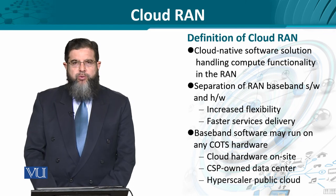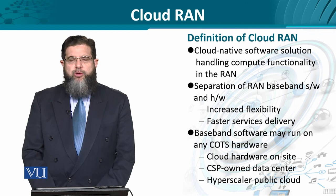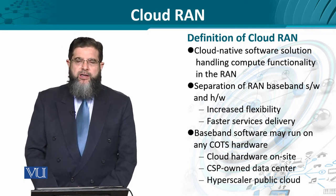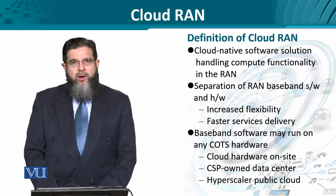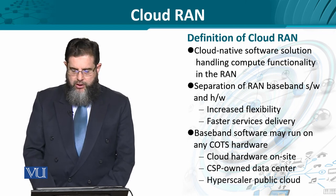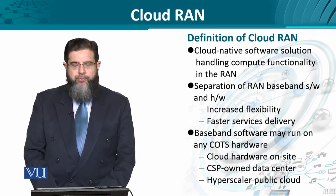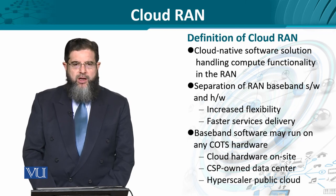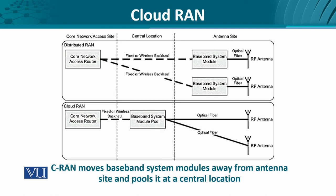The cloud-based software will be controlling or accessing the hardware which was earlier deployed on-site. We have options: an on-site cloud known as the private cloud, a data center-based cloud service provider, or a public cloud like AWS. Cloud-RAN moves the baseband system modules away from the antenna — perhaps tens, hundreds, or even thousands of kilometers away — closer to the core network, and offers pooling capability: sharing across multiple antennas instead of each antenna having its own dedicated RAN functionality.